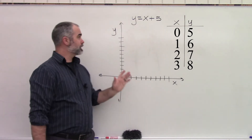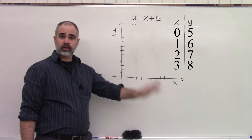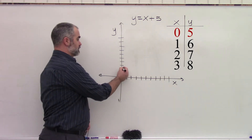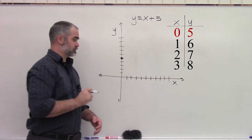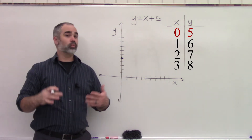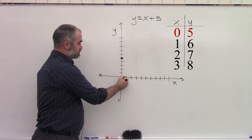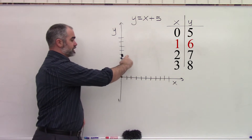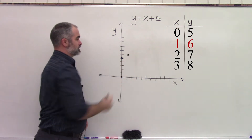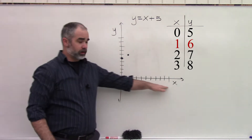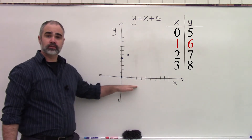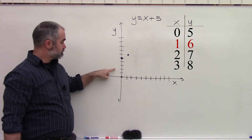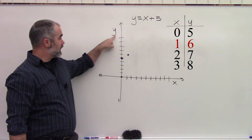If I pick some different numbers here, I can start seeing what happens. When I plug 0 in, it's going to give me 5 as an output. If I put 1 in for X, I get out 6 on my Y. I have my input variable X: if it's 0, it goes to 5 as my output variable; input is 1, my output is 6. And you can keep plotting these points.